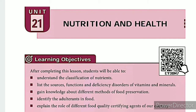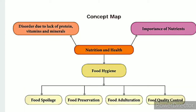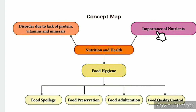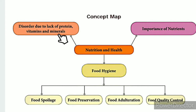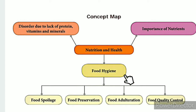The QR code link and ICT corner link are in the description box. This unit guide is also in the description box. Concept map: Nutrition and Health. In the lesson level, there are 6 topics in total. The first is the importance of nutrients. The second topic is disorders due to lack of protein, vitamins, and minerals. The third topic is food hygiene, and the fourth topic is food preservation.